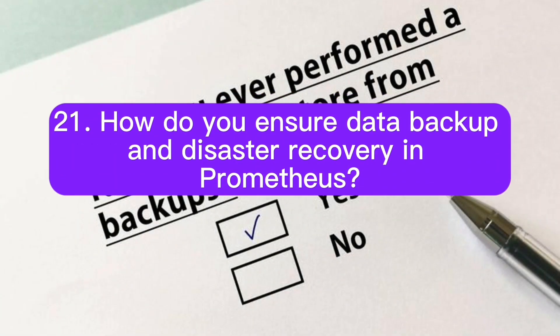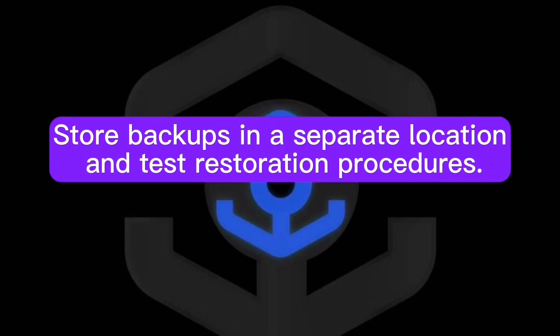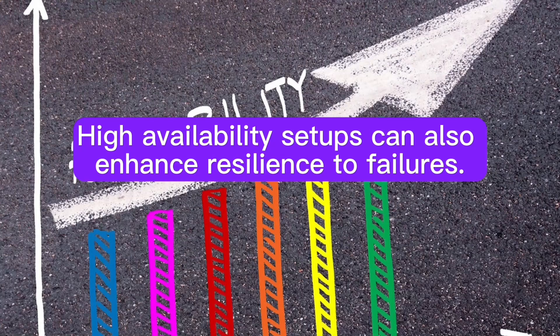How do you ensure data backup and disaster recovery in Prometheus? To ensure data backup and disaster recovery, regularly back up the Prometheus data directory and configuration files. Store backups in a separate location and test restoration procedures. High availability setups can also enhance resilience to failures.